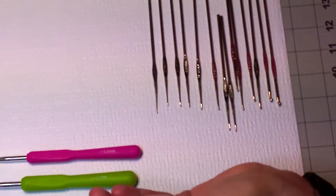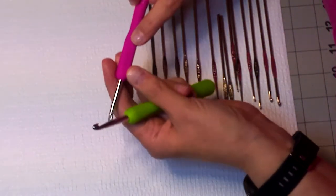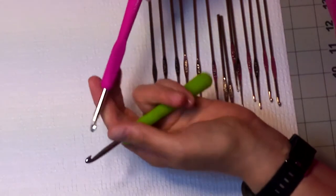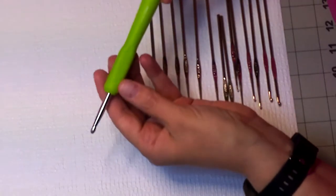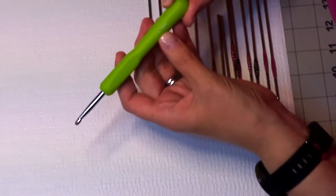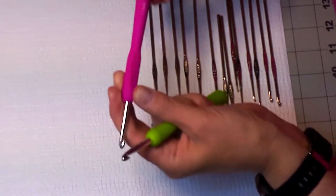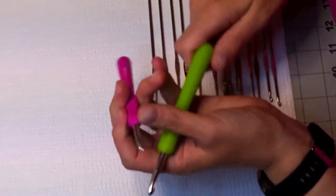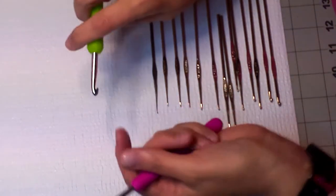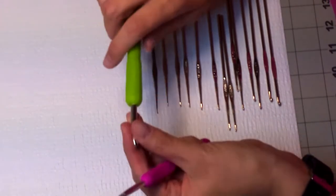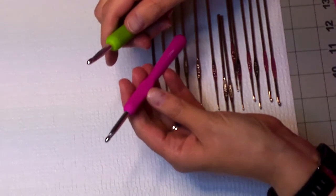Then we have other ergonomic hooks which are also a Boye brand. This is an I hook which is 5.25 millimeters, and a J hook which is 5.75 millimeters. These ergonomic hooks have more of a rubbery silicone handle grip on them. I do like them because if you're working on projects longer, they just kind of fit your hand and they warm up nicely and make it easier to crochet for long periods of time.